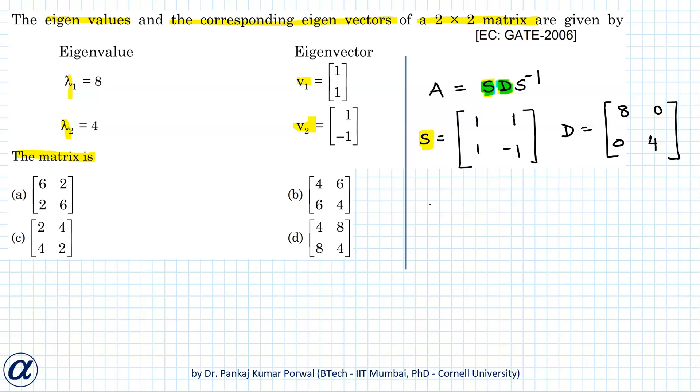I can quickly find its inverse as 1 upon determinant of S that will be minus 2. I will have to interchange these two elements and change sign of these two elements. So that will give me minus 1, 1 and minus 1, minus 1. And here I can multiply this minus 1 by 2 to all the entries of the matrix. So I get S inverse as 1 by 2, 1 by 2, 1 by 2, minus 1 by 2.